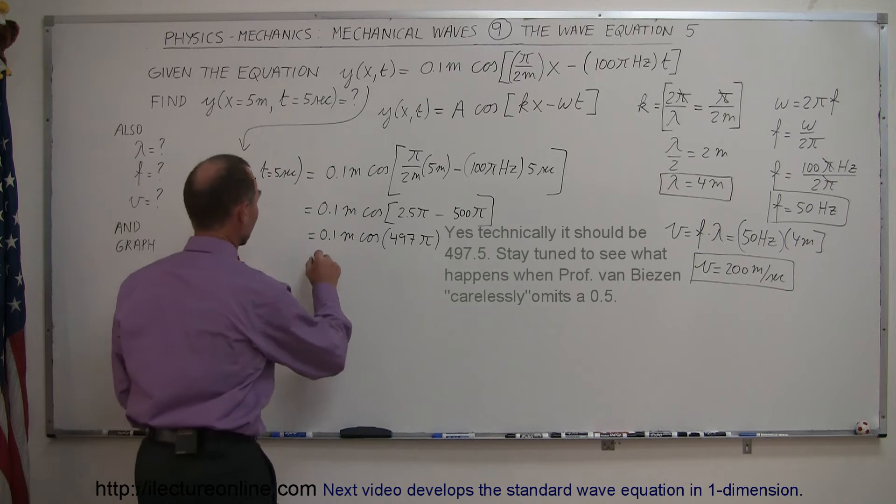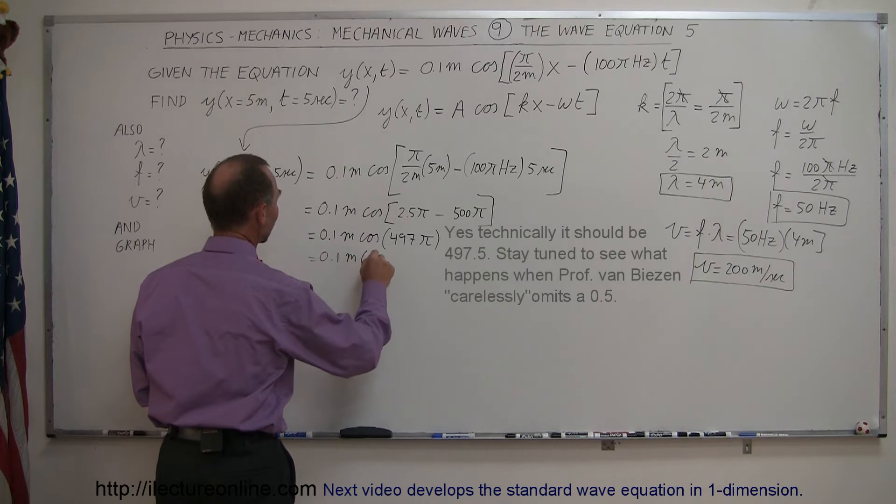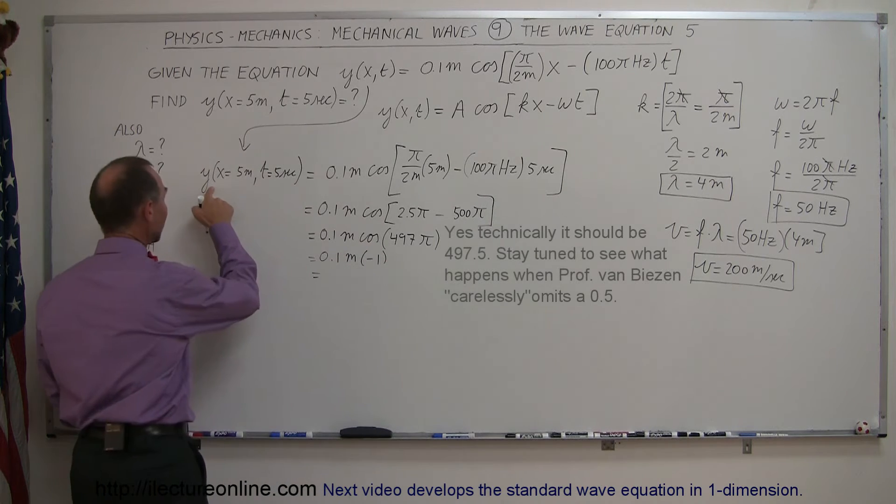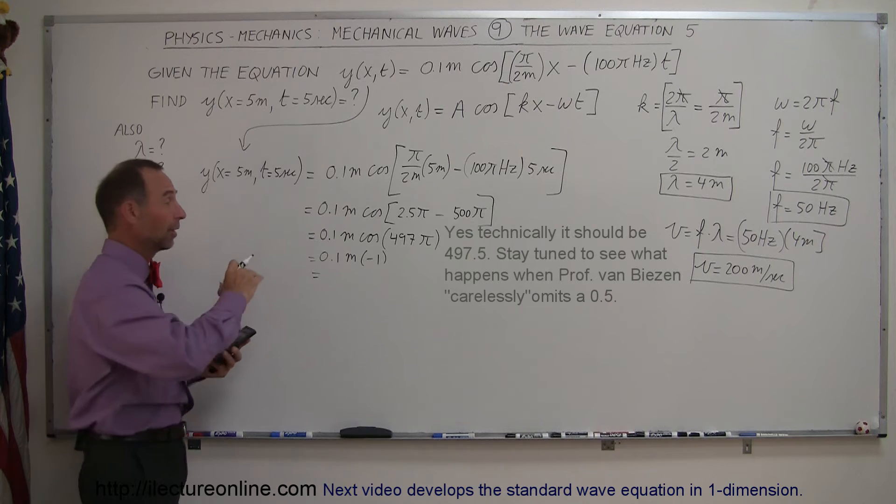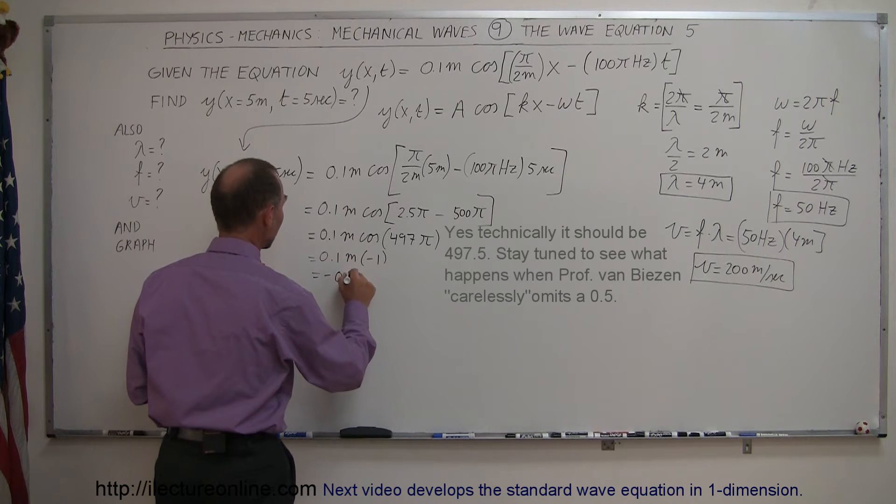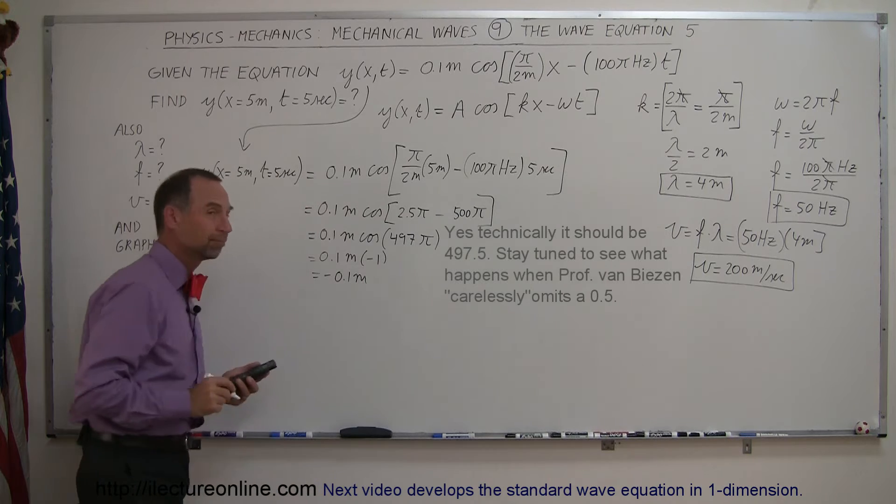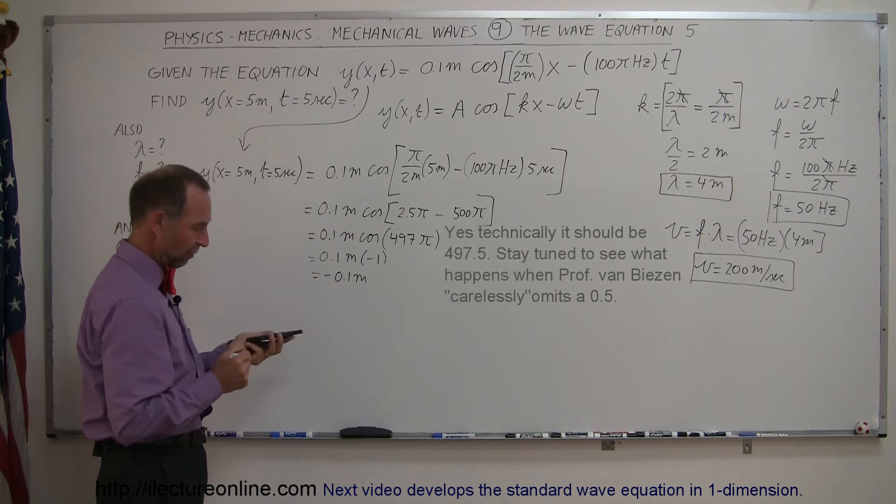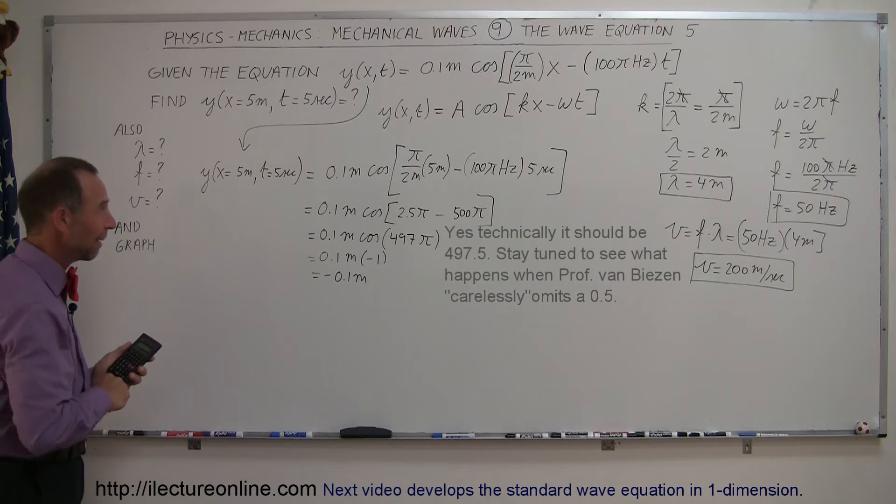Interesting. So this equals 0.1 meter times minus 1. So finally, my answer is the displacement away from the equilibrium point of this wave, probably a string, is equal to minus 0.1 meters. That would be maximum amplitude in the negative direction of 0.1 meters.